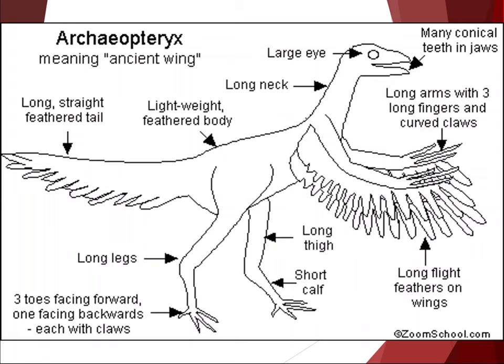Whales and birds are two examples of how the sequential nature of fossils can be used to build up a picture of evolutionary history.